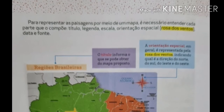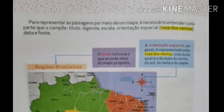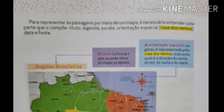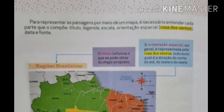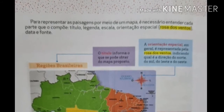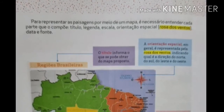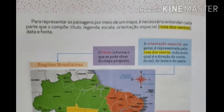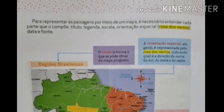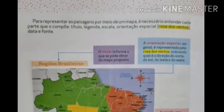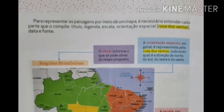Observem, nós temos aí a região brasileira, que é o título — a informação que se pode obter do mapa proposto. Aqui temos o mapa e temos o nome, que é o título. De onde é esse mapa? Das regiões brasileiras.